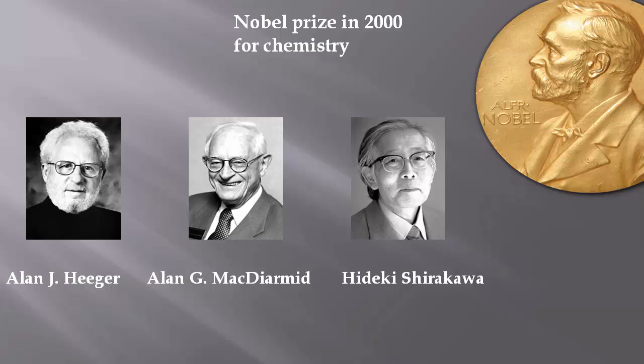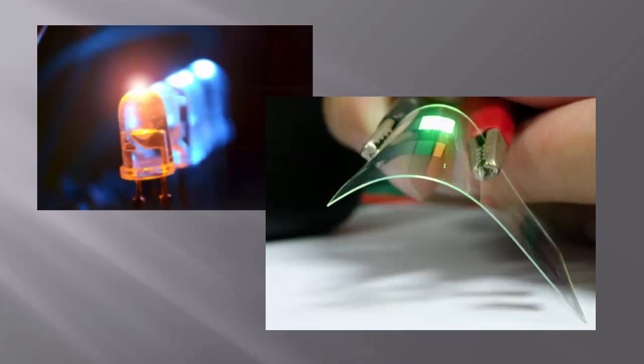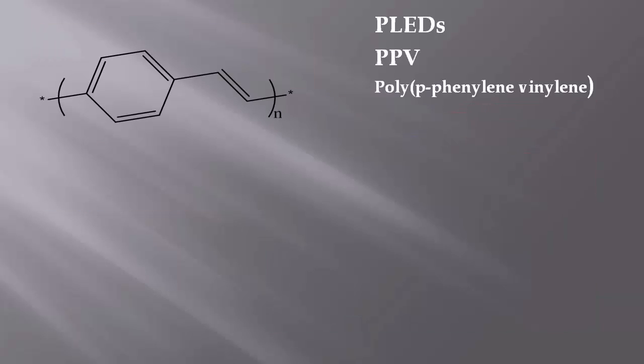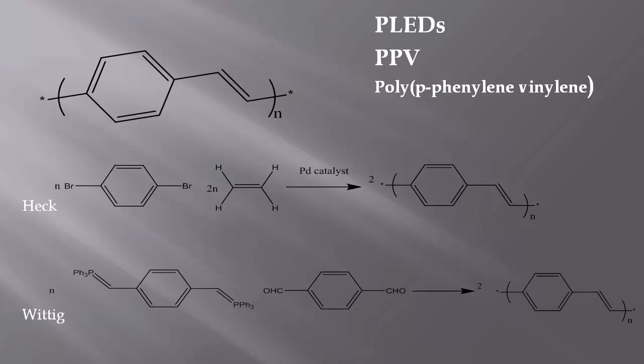and now conjugated polymers have found many applications. One of these is polymer light-emitting diodes, mostly employing the derivatives of polymer PPV. It can be manufactured relatively easily from readily available materials by step-growth polymerization based on Heck-Wittig couplings.